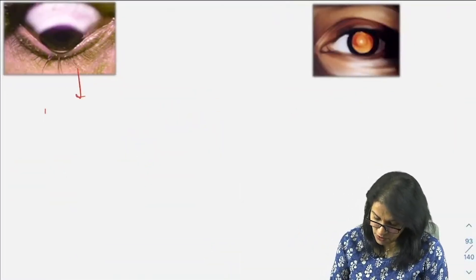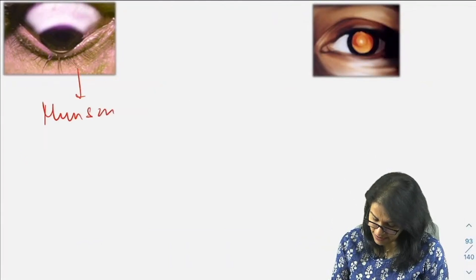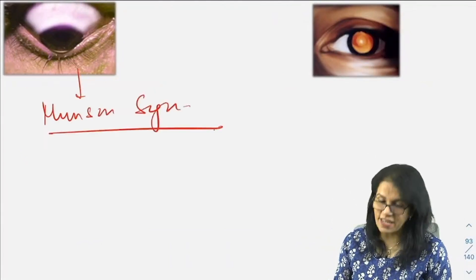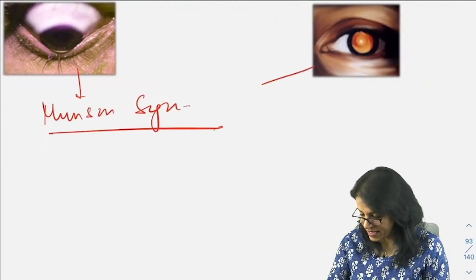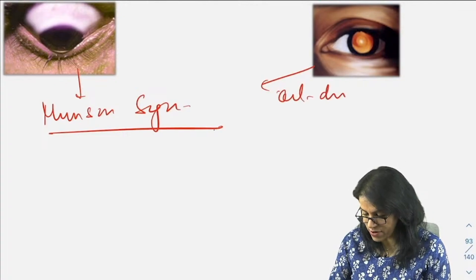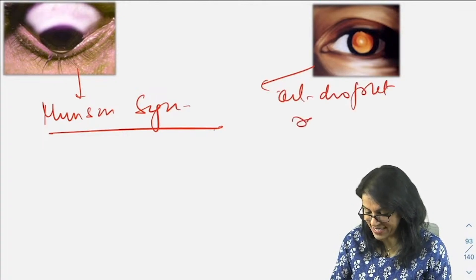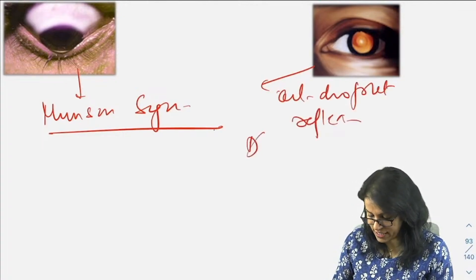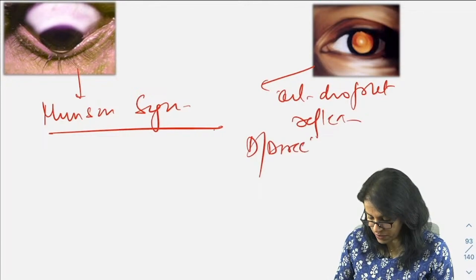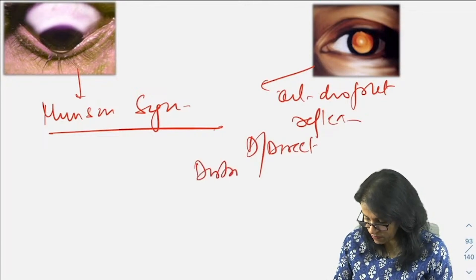What is this? We all know we are talking about Munson sign, V-shaped deformity of lower lid on looking down in keratoconus. And this we have just learned is oil droplet reflex, which is seen in distant direct ophthalmoscopy.